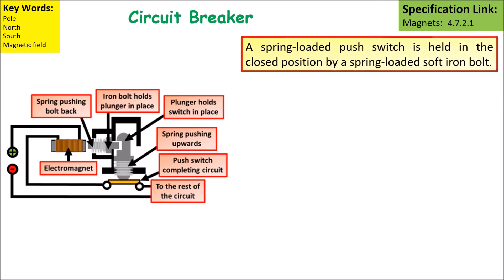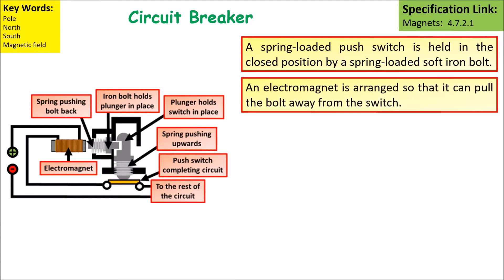The second type is a circuit breaker. We start off with a spring loaded push switch which is held in the closed position by a spring loaded soft iron bolt. An electromagnet is arranged so that it can pull the bolt away from the switch.